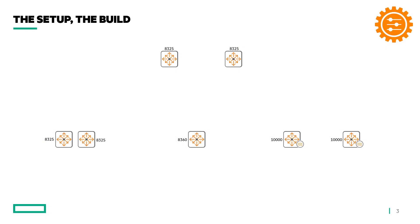Here is the initial setup. We have a couple of 8325s that will act as spine switches, and we have a couple of leaf switches. You can see two 10,000 switches which we will be using for stateful firewalling. We have an 8360 switch that will connect to the outside world, and a couple of 8325s as leaf switches which we will be configuring as a VSX pair.